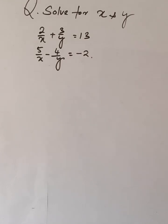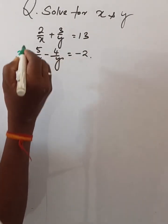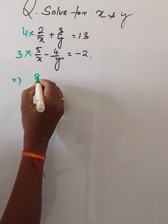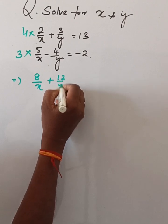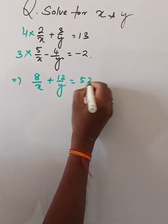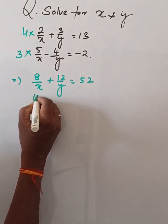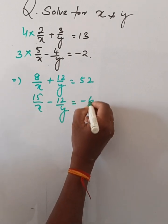Solve for x and y: 2 by x plus 3 by y is equal to 13, and 5 by x minus 4 by y is equal to minus 2. Keeping balance, 3 is there and 4 is here. This gives 8 by x plus 12 by y is equal to 52. Then, 15 by x minus 12 by y is equal to minus 6.